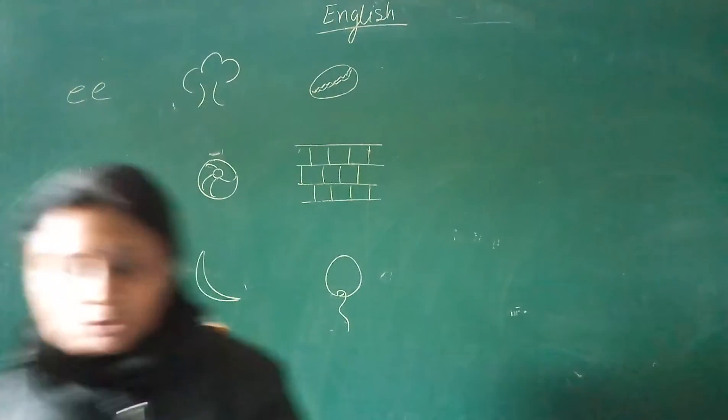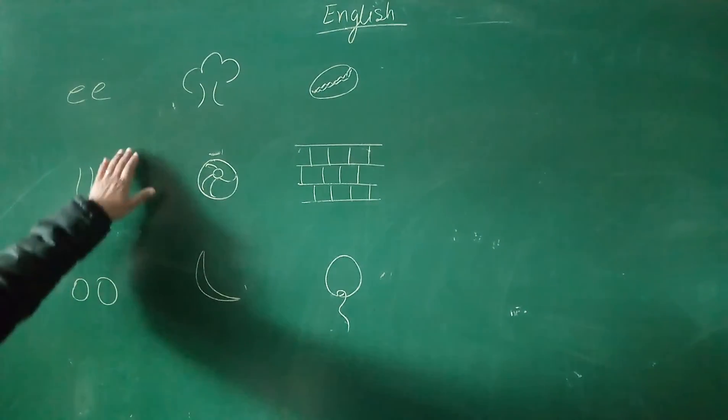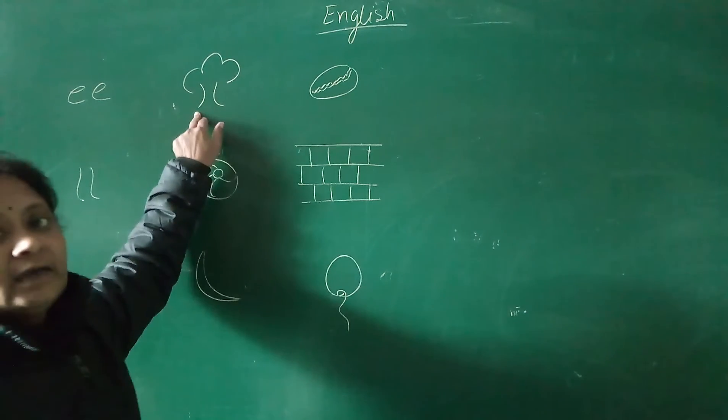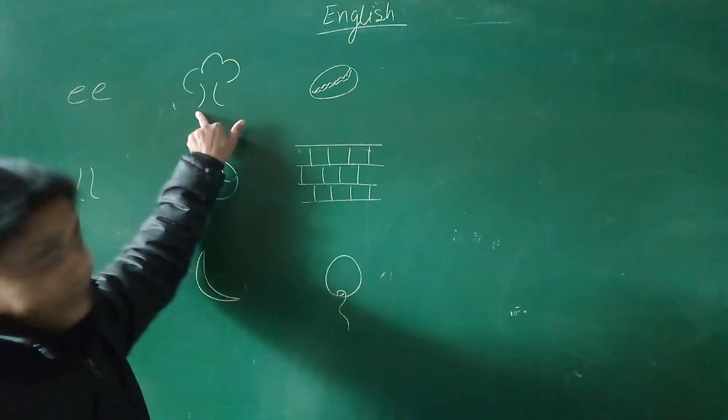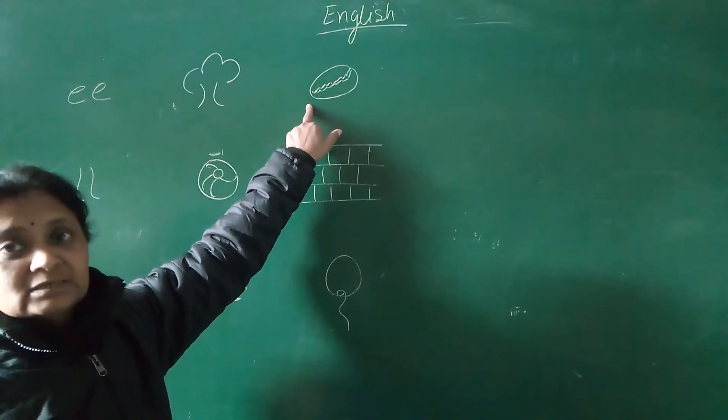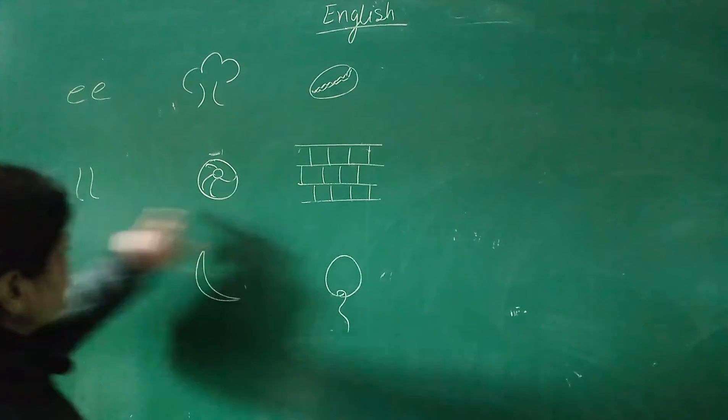You have to make two pictures. So I have drawn some of the pictures. First I have drawn tree, double E. This is see, double E. This is double L.